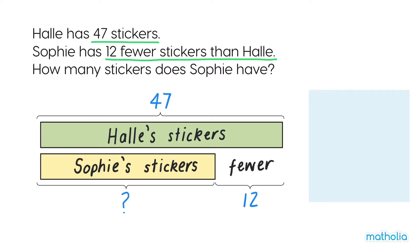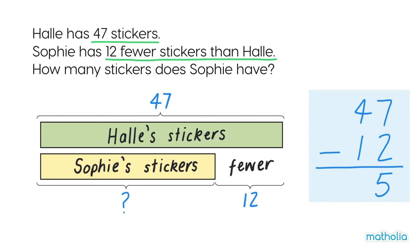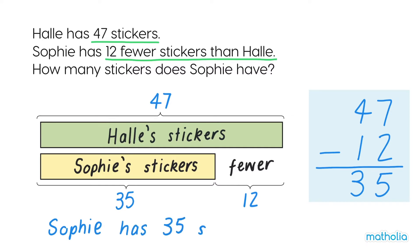To find Sophie's stickers, we subtract the difference from Hallie's stickers. Subtract the ones: 7 ones take away 2 ones is 5 ones. Now subtract the tens: 4 tens subtract 1 ten is 3 tens. 47 minus 12 is 35. So Sophie has 35 stickers.